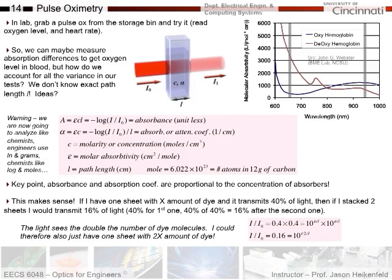Here's an example: if I have one sheet with X amount of dye and it transmits 40% of the light, and I stack two sheets, I would transmit 16% — 40% for the first and 40% of 40% for the second. When I did that, the light saw double the number of dye molecules. I could have just made one sheet with twice the dye and gotten the exact same result. We can use this to start extracting calculations because we don't need path length — by using both measurements, we can eliminate unknown variables like path length.